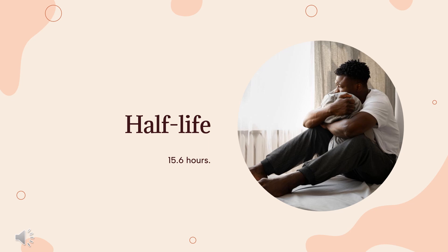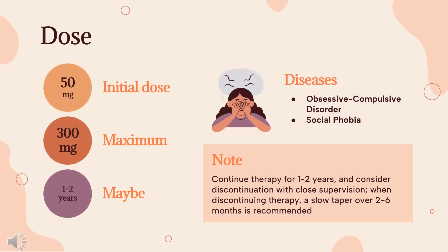Half-life: 15.6 hours. Dosing — Obsessive-compulsive disorder: Conventional tablets, 50 mg QHS initially, may increase by 50 mg per day every 4–7 days, up to 100–300 mg/day. Doses greater than 100 mg/day should be divided every 12 hours. Social phobia (off-label): Immediate release 50 mg PO daily, may increase by 50 mg at 1-week intervals; usual dose range is 100–300 mg/day. Panic disorder (off-label): 25–50 mg PO daily; after several days, gradually increase to 100–200 mg/day, and may increase to 300 mg/day for patients who fail to respond after several weeks.